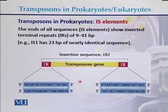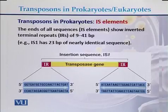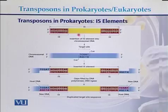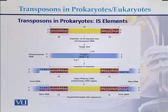So in IS elements, there is a transposase gene in the middle and inverted repeat sequences on both ends.